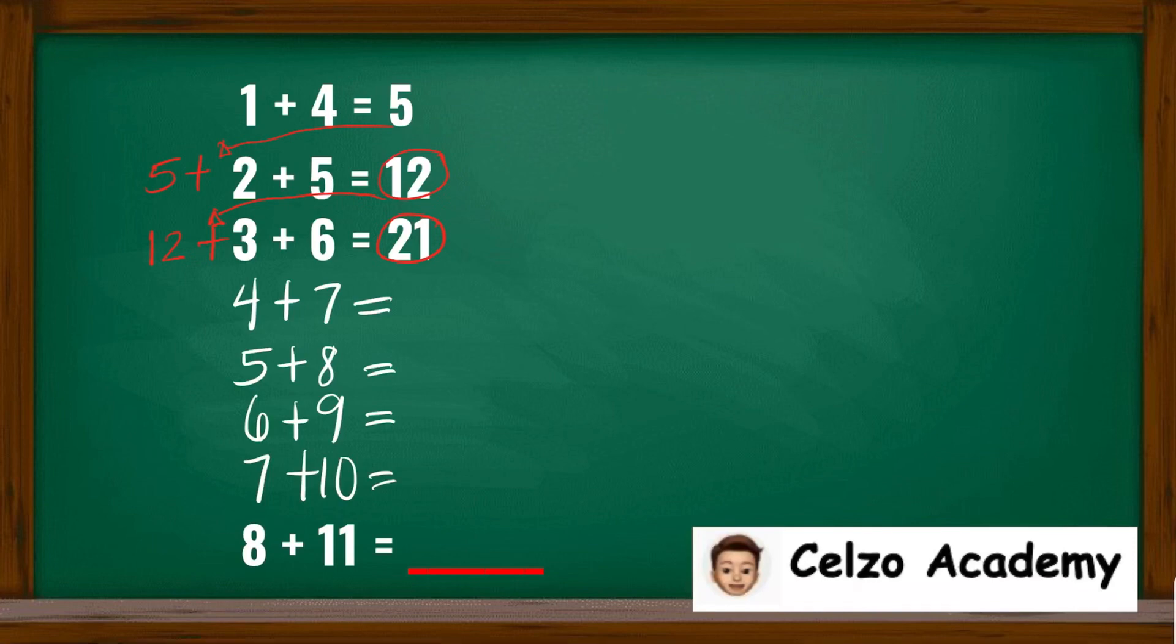Continuing with the pattern, this means that 4 plus 7 is 11, and then we need to add the previous answer, 21. So the answer is 32.